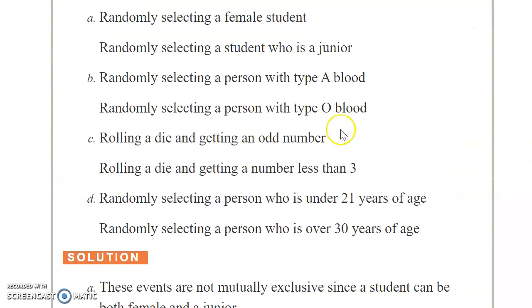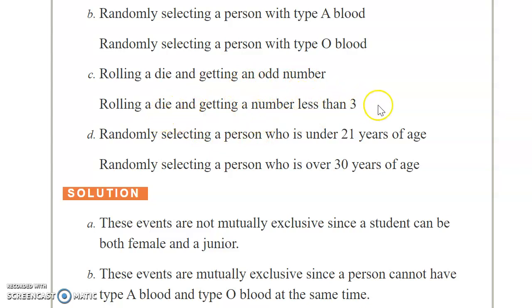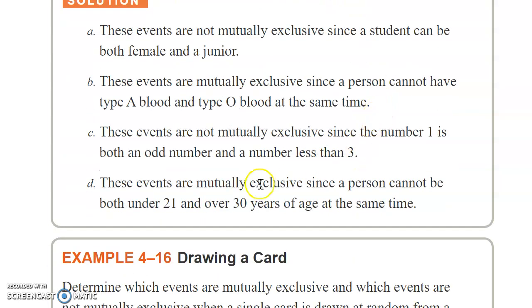Here are some examples. If you roll a die and get an odd number, and you also consider rolling a die and getting a number less than three — are these two events disjoint? No, of course not, because you can get a one, which is both odd and less than three. So the answer is they are not mutually exclusive — they are not disjoint.